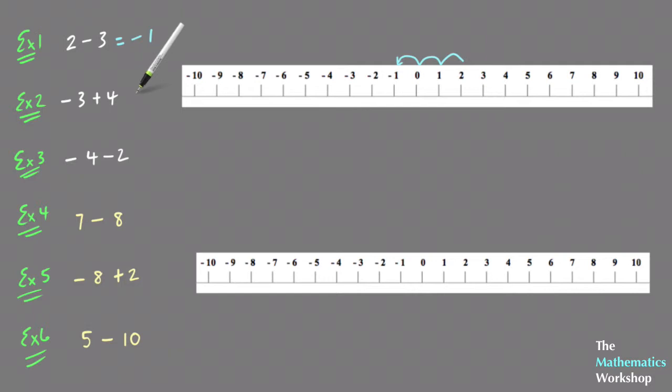Example 2: minus 3 plus 4. So again, starting on minus 3 and moving 4 in the positive direction means I start on minus 3 and then move 4 to the right. So 1, 2, 3, and 4, and I end up on 1. So minus 3 plus 4 equals 1.